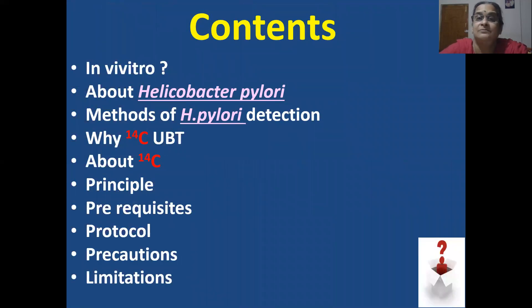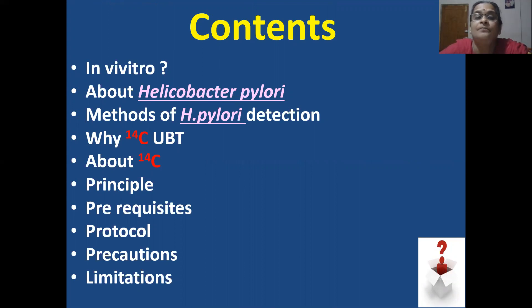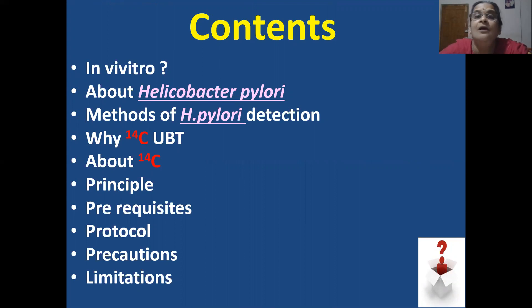The contents of this presentation will be: what is in vivo and about Helicobacter pylori, methods of H. pylori detection, why 14 carbon UBT and about the radionuclide 14 carbon, principle, prerequisites, protocol, precautions, and limitations of this test.